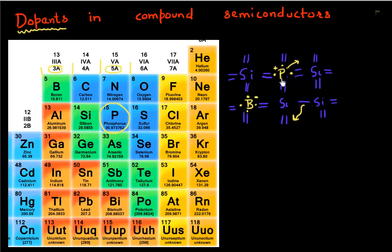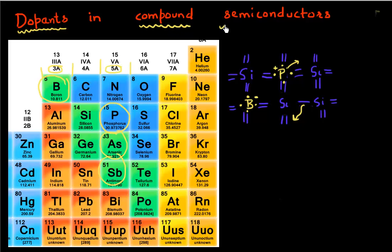The positively charged hole is also free to move around in the lattice. Common dopants for silicon: for donors, we go to the right-hand side of the periodic table. Common donors include phosphorus, arsenic, and antimony. For acceptors, we go towards the left-hand side of the periodic table, and boron is a common acceptor in silicon.